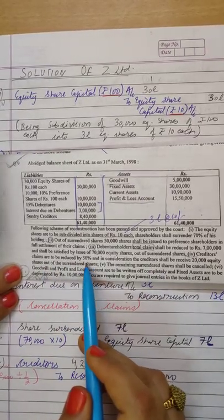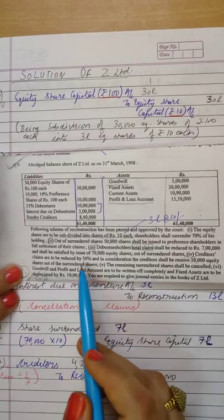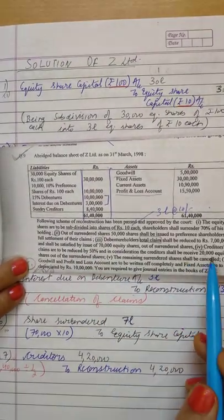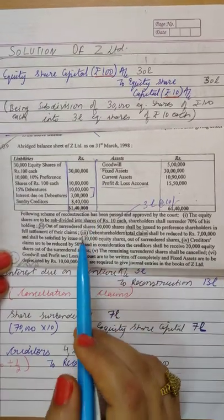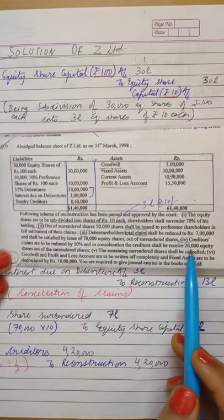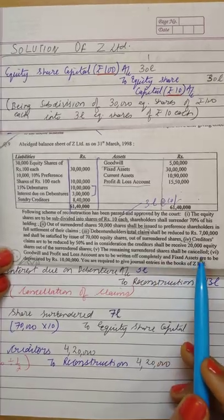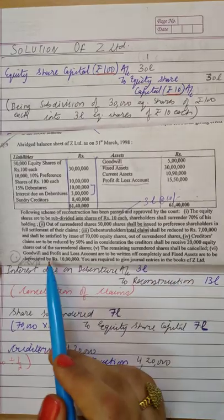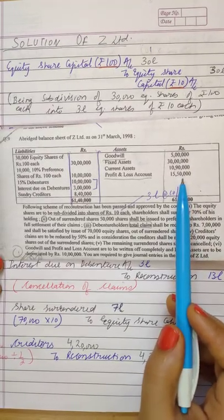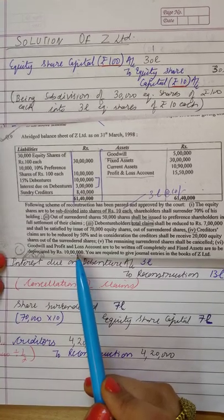Creditors' claim of Rs.8,40,000 is to be reduced by 50%, and in exchange they receive 20,000 equity shares. So Rs.4,20,000 (half of Rs.8,40,000) goes to Reconstruction Account, and Rs.2,00,000 in equity shares is issued from share surrender — Share Surrender Account Dr. to Equity Share Capital Rs.2,00,000. Remaining surrendered shares shall be cancelled: the remaining balance from share surrender goes to Reconstruction Account. The total credited to Reconstruction Account comes to Rs.34,20,000 — from preference shares Rs.10 lakh, debenture holders Rs.13 lakh, creditors Rs.4.20 lakh, and surplus from share surrender Rs.7 lakh. This is used to write off goodwill of Rs.5 lakh, P&L debit balance of Rs.15 lakh, and depreciate fixed assets by Rs.10 lakh, with the remaining Rs.3,70,000 transferred to Capital Reserve.